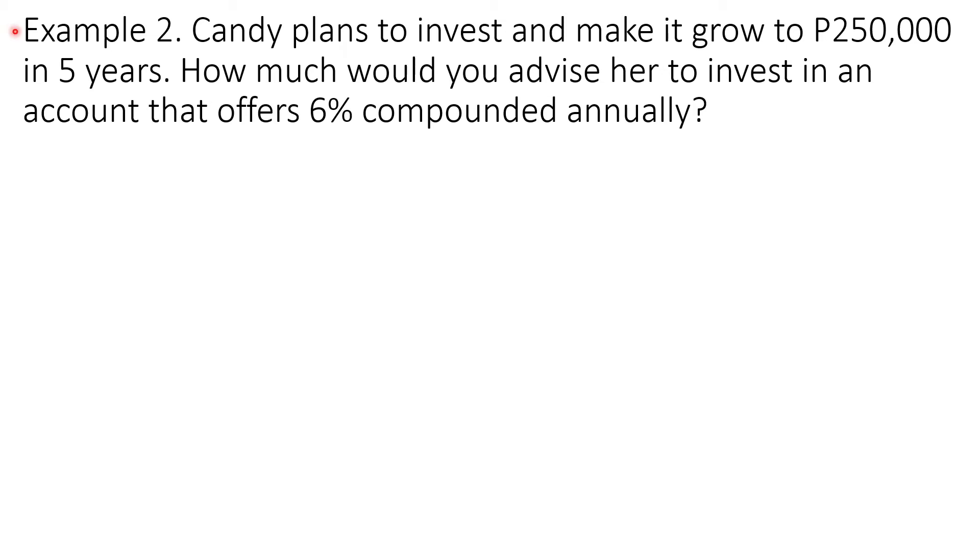Example 2: Candy plans to invest and make it grow to 250,000 pesos in 5 years. How much would you advise her to invest in an account that offers 6% compounded annually? The given in this problem are: the value of F or the future value which is 250,000 pesos, because Candy wants her investment to grow to this amount. We also have the value of T which is 5 years. The value of M which is equal to 1, because this is compounded annually. We also have the compound interest rate which is 6% or 0.06. And then we will solve for the principal amount, the amount that Candy will invest.